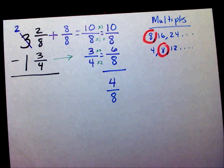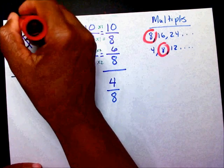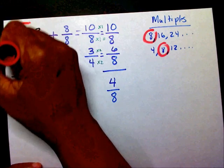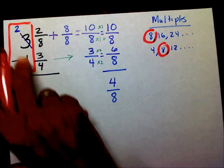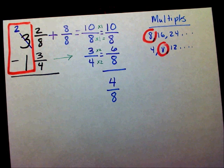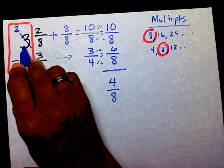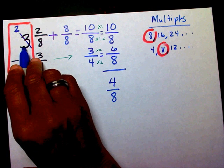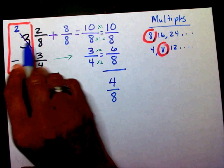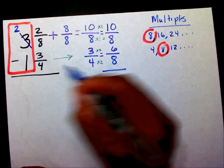However, don't forget about your whole numbers. Remember, you have two minus one — it's two now because you borrowed one from the three to put here.